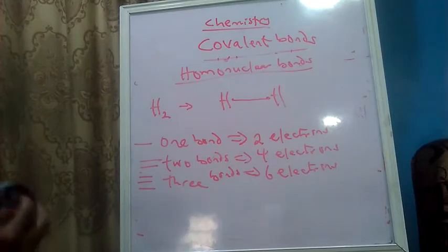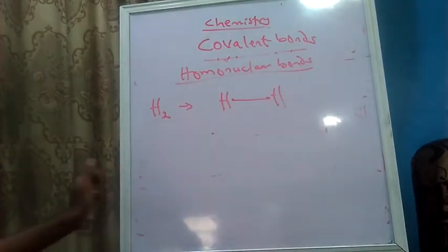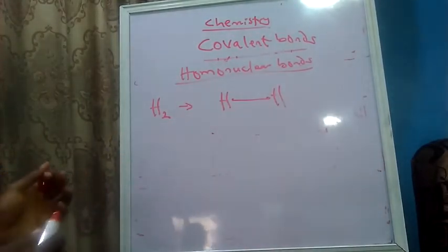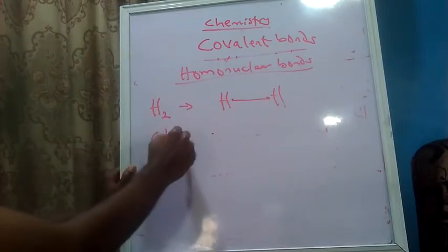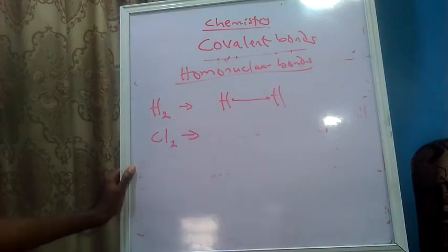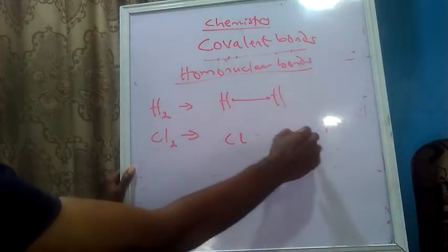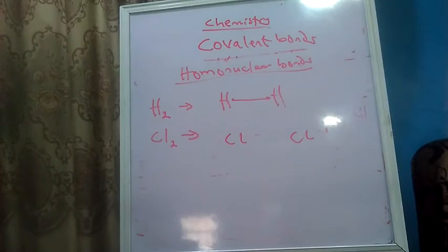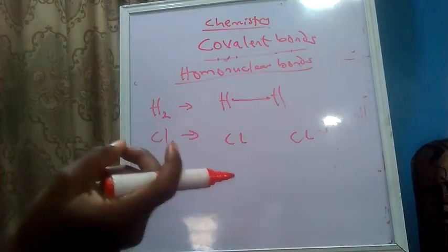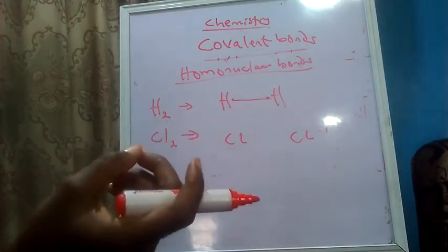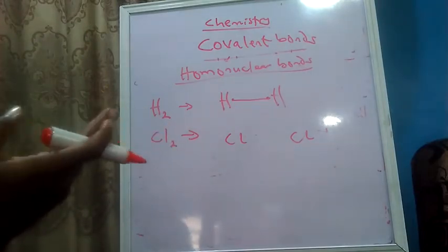We move now to another popular covalent molecule — chlorine, Cl2. Chlorine has a configuration 2-8-7, so we are looking at two chlorine atoms coming together. 2-8-7 means seven valence electrons for chlorine, meaning seven dots around the chlorine atom. Our format is to go right, up, left, down, systematically — one, two, three, four, five, six, seven.